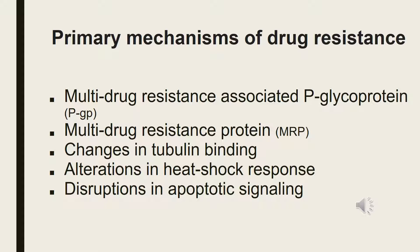The most widely recognized mechanism of resistance of vinorelbine is through MDR and PGP. PGP stands for permeability glycoprotein; it is a type of multi-drug resistant protein that binds to vinorelbine and extrudes it from the tumor cells. Changes in alpha and beta tubulin alterations, heat shock response, and disruptions in apoptotic signaling are also mechanisms of drug resistance identified in cells with acquired resistance to vinorelbine.